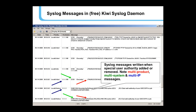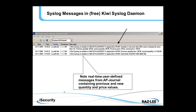Finally, syslog with AP Journal. This slide shows syslog in general using a Kiwi syslog daemon. In red, multi-product firewall and authority-on-demand originated these messages from two different systems shown in green, from two different IP addresses shown in blue. AP Journal can also send to a syslog product. For example, in this case the previous price was $99.65 and the current price is $199.65. Since the price changed by more than 2%, an alert was initiated, a syslog message was sent, and we received this information on our SIEM product.